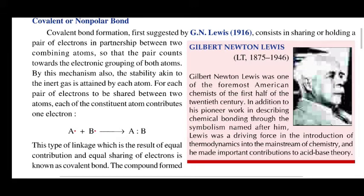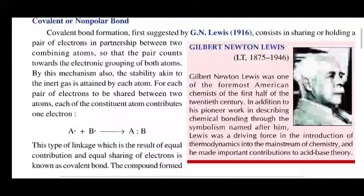In a covalent bond, electron pairs are shared. By this mechanism, stability akin to that of an inert gas is attained by each atom. So the covalent bond achieves inert gas stability. For each pair of electrons to be shared between two atoms, each of the constituent atoms can contribute one electron.